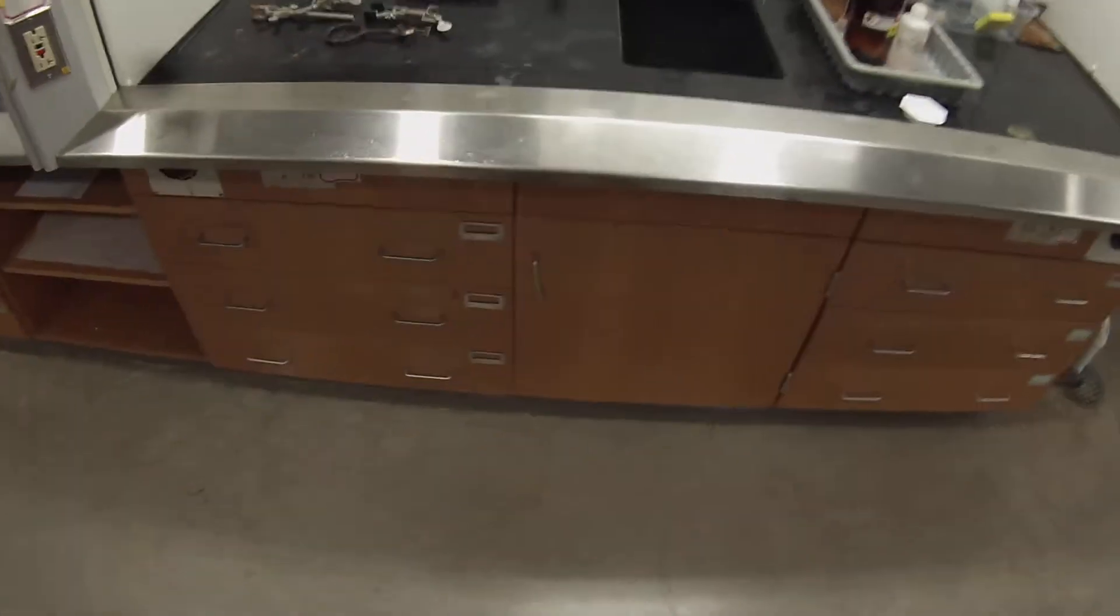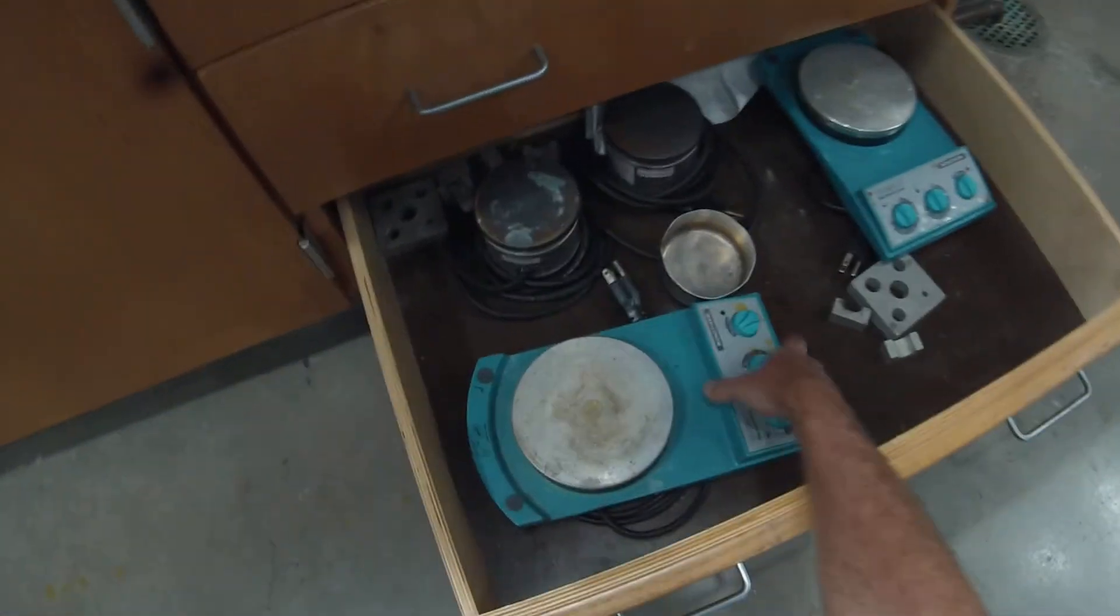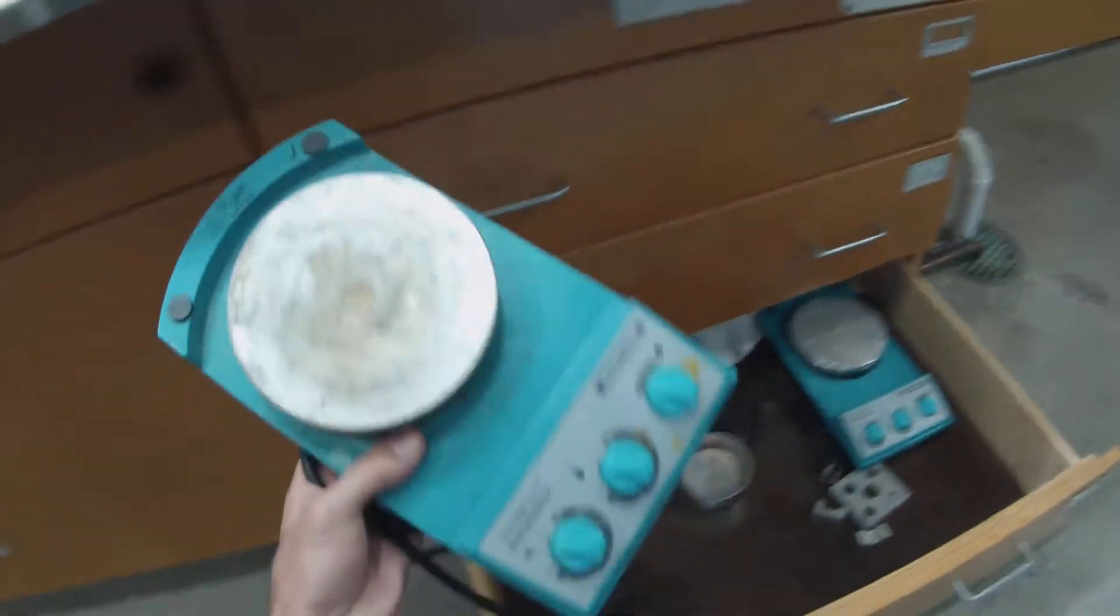So there are six drawers in each organic lab and they should be labeled A for the top left and B for the top right, C for the middle left, D for the middle right, and then E and F. In drawer F is where you'll find things like hot plates and dishes, so we're going to grab one of these stirring hot plates.